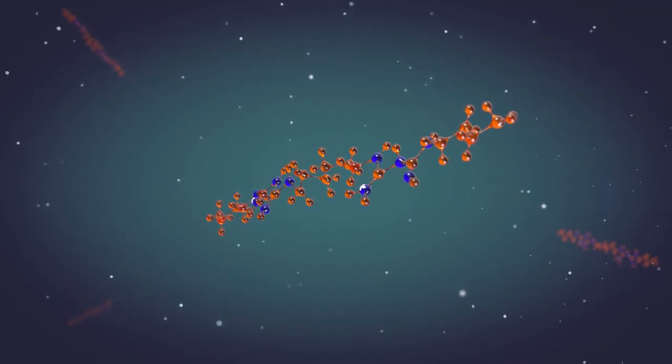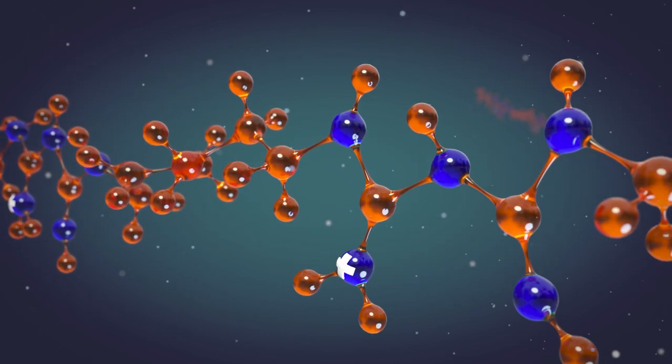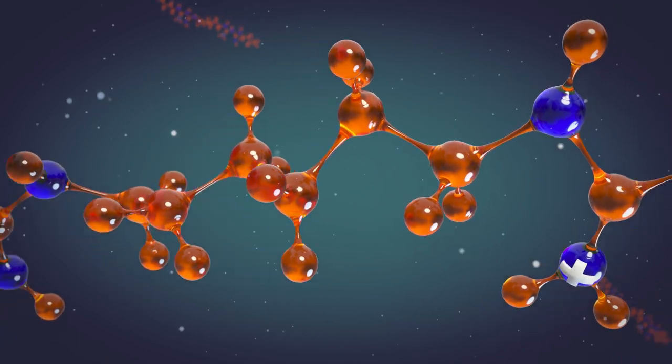Polyhexanide, or PHMB, is used as an antimicrobial substance. It is able to attack and destroy various types of microorganisms.